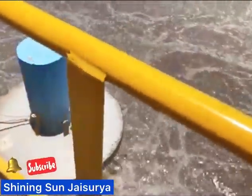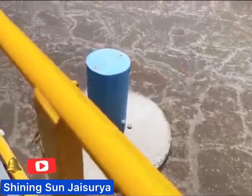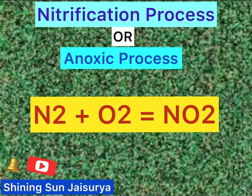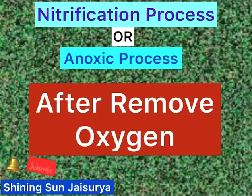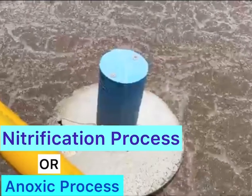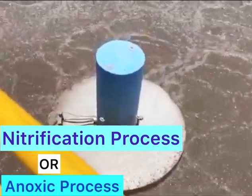After the aeration begins, the anoxic process — or nitrification process — begins. By this anoxic process, the sewage water is being cleaned. What is the anoxic or nitrification process? Sewage solids contain more nitrate, NO2 nitrogen. Activated sludge bacteria utilize the oxygen from NO2 and convert it into nitrogen gas, that is N2. This process is called the anoxic process or nitrification.